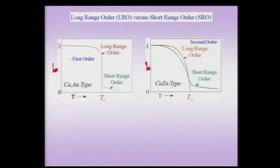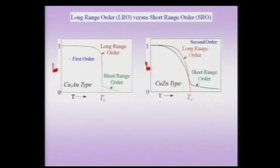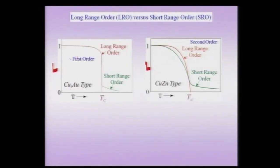There is also short range order. Looking at the change in order with temperature — tracking both the long range order parameter (in red) and the existence of short range order (in green) — you can see that the order slowly decreases and after a certain temperature T_c there is no long range order. But the important point to note is that even when there is no long range order, some short range order might persist. This can be seen for both the Cu₃Au type and the CuZn type ordered structures — even after the long range order has vanished, the short range order persists. This is an important message.